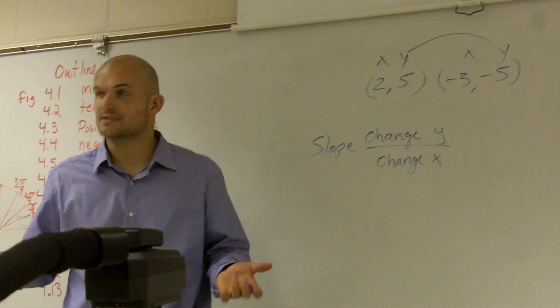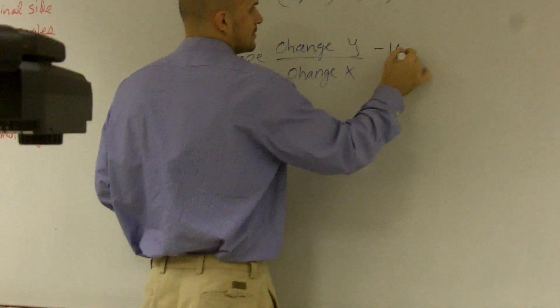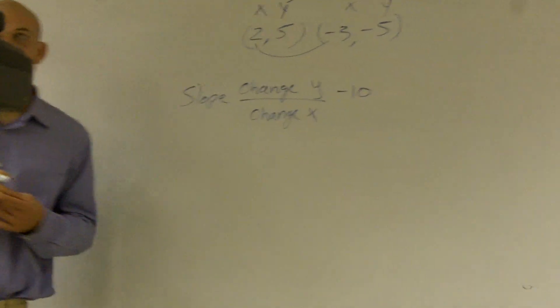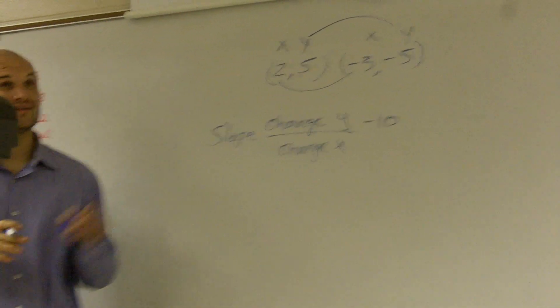You're going down. How many units? You can say I'm going down negative 10, right? And then to go from 2 to negative 3, are you going up or down? Up or down? 2 to negative 3. Down. And how many units? Five.